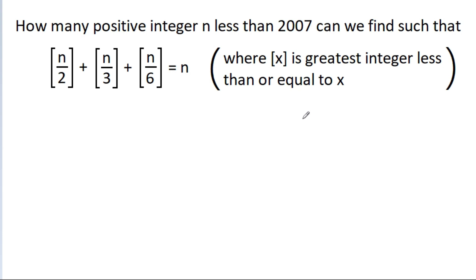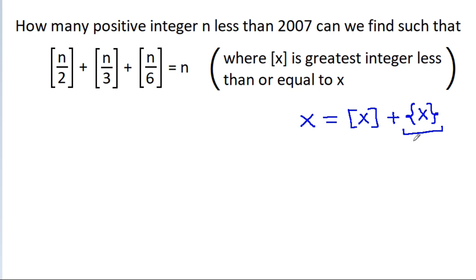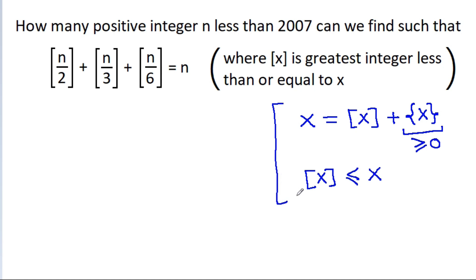For any number x, it is equal to the greatest integer of x plus the fractional part of x, and the fractional part of x is greater than or equal to 0. That means the greatest integer of x will be less than or equal to x.